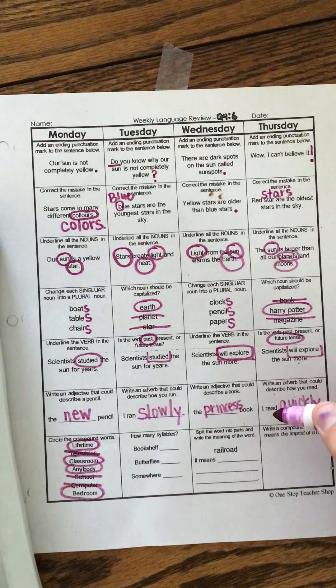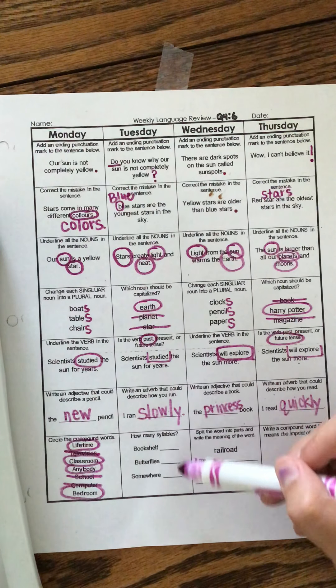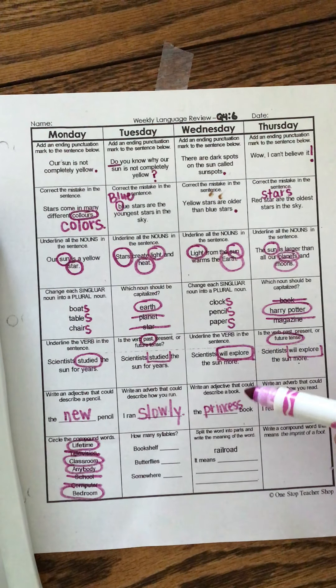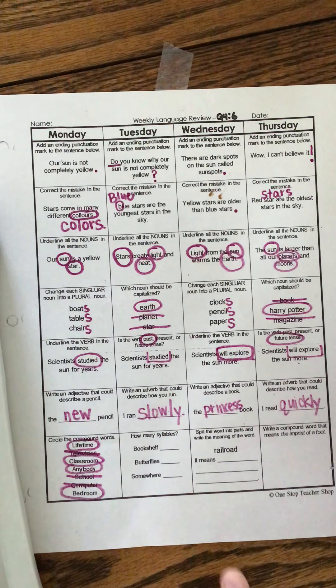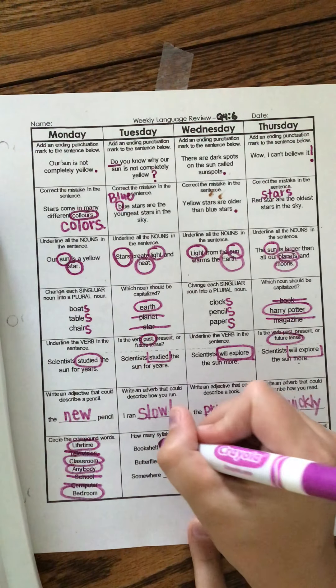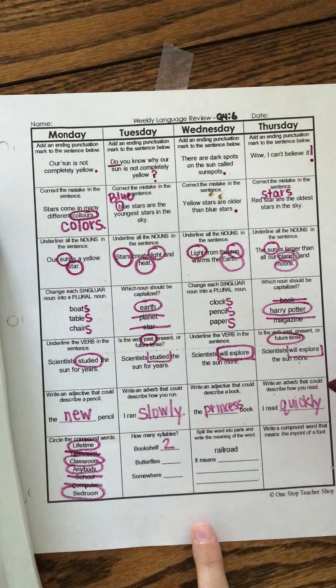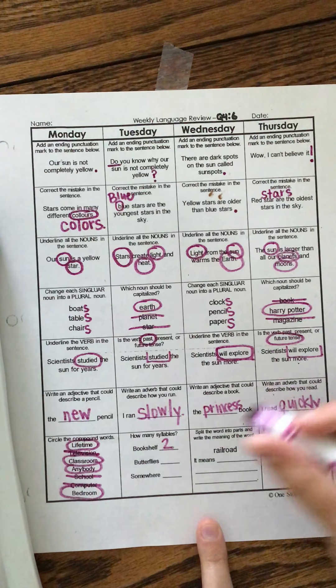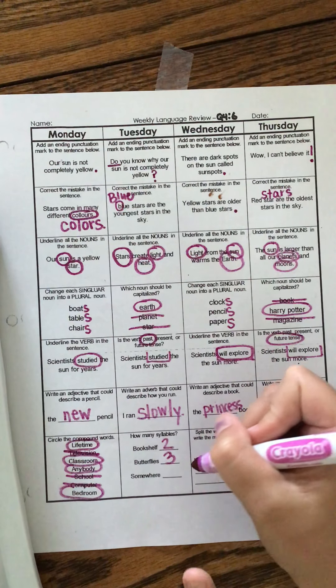How many syllables are each word? Bookshelf. If you don't want to clap, you can bookshelf. All right. Butterflies. Butterflies. Somewhere.